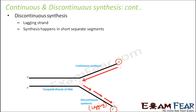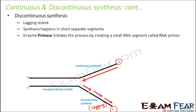On the lagging strand, primase enzyme will come and create a very small portion of RNA, also known as a primer. Above this RNA primer, DNA polymerase will come and add free nucleotides to the free hydroxyl group of that RNA primer. Once this RNA primer is created, a free hydroxyl group is made available to DNA polymerase, so now DNA polymerase can add free nucleotides to this RNA primer.